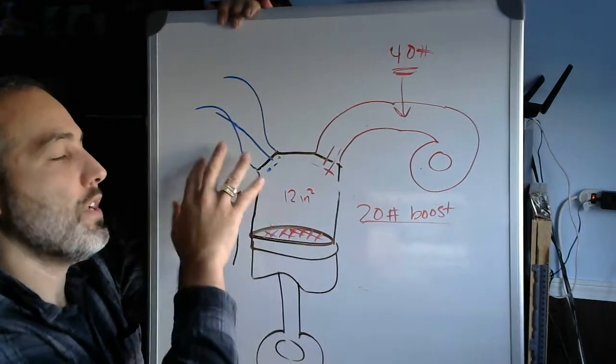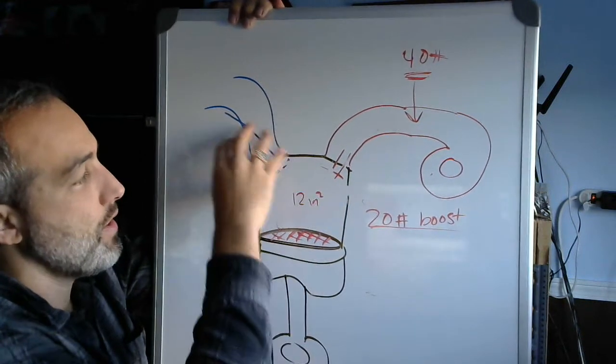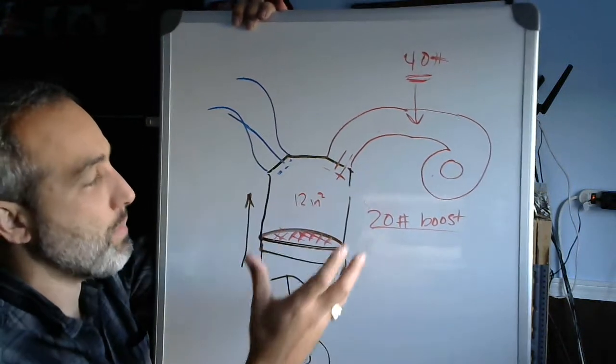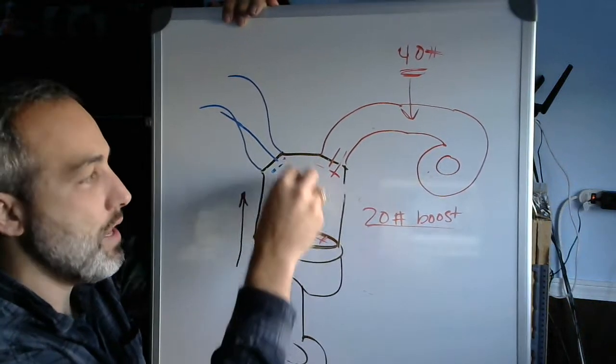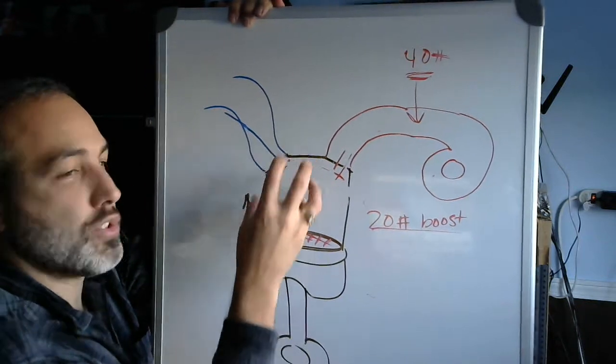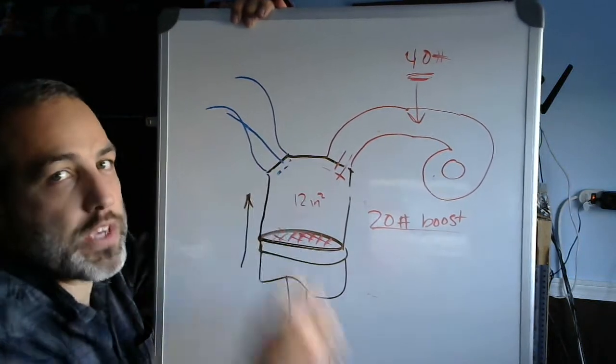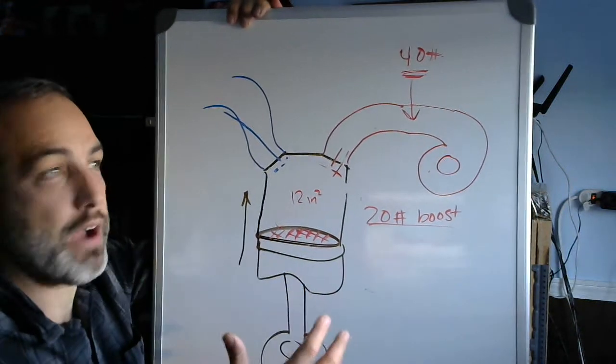So you're going to get twice as much of the fresh air as you would versus if it was at 40 psi. And I don't mean twice as much as in the whole chamber, it's going to mean the space available. This 40 psi space is going to occupy twice as much as the 20 psi space would. So that's another source of fresh air and fuel entering the engine and another source for more horsepower.